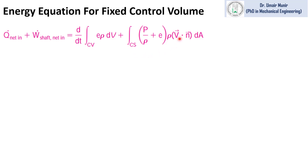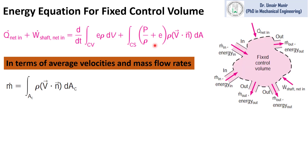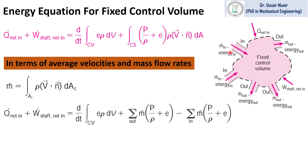By replacing V_R with V, this equation stands for a fixed control volume. We can also represent the equation in terms of average velocity and mass flow rate, since it is sometimes difficult to evaluate volume or surface integrals directly. Using the definition of mass flow rate — rho V dot N delta A — we replace this with M_dot, where the summation accounts for multiple inlets and outlets.